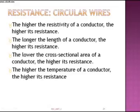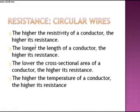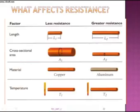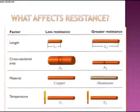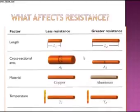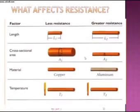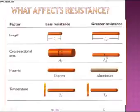Higher resistivity of the conductor increases resistance. Once the length of the conductor increases, resistance increases because they are directly proportional. Similarly, lower cross-sectional area of the conductor gives higher resistance. So lower length gives less resistance and higher length gives greater resistance, and higher cross-sectional area gives less resistance while lower cross-sectional area gives higher resistance.